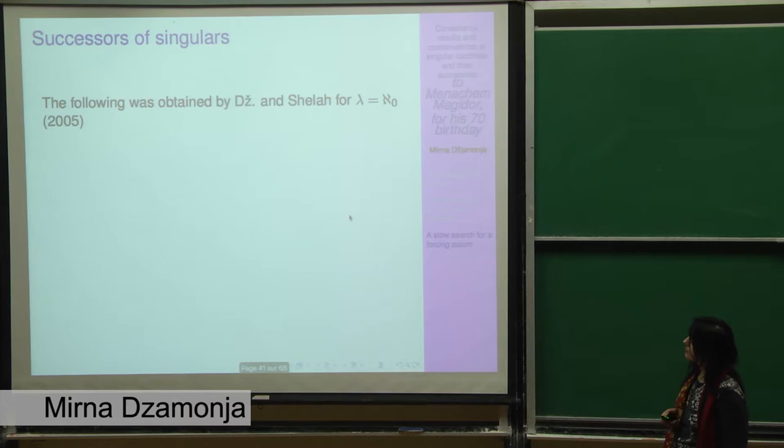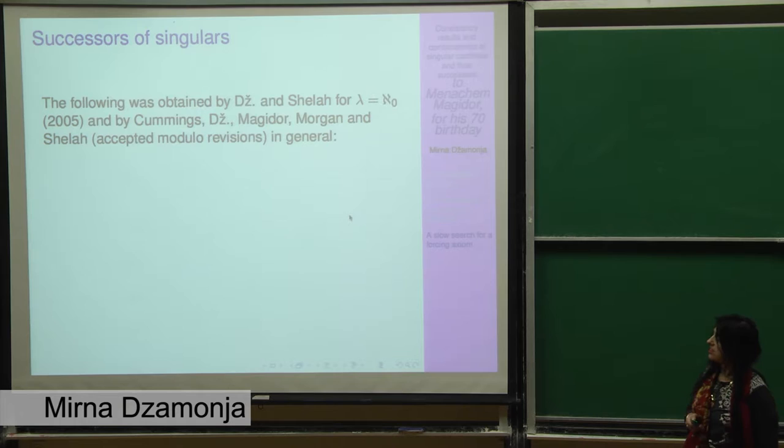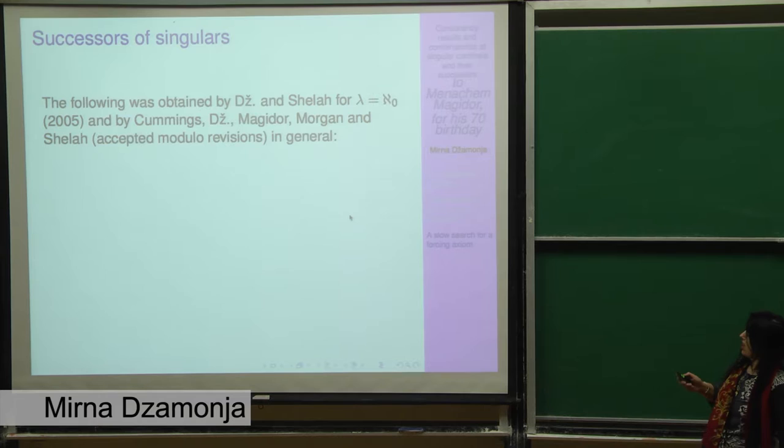But let me continue with other successors of regulars. You can also have u_kappa between kappa plus and 2 to the kappa. This was done for aleph 1 by Mekler and Shelah in two different papers. And we have done it with Shelah in general, with the difference that Mekler and Shelah can get one universal graph and we don't know how to do it in general. Now let us move to the successors of singulars. The following theorem was obtained in a paper that Sahron and I published in 2005 for countable cofinality, and in a paper that we have with five authors - Cummings, Magidor, Morgan, Shelah and myself - accepted modulo revisions. So I hope it will soon be really accepted if the referee likes our revisions.